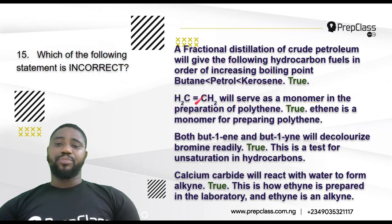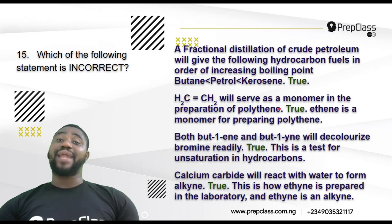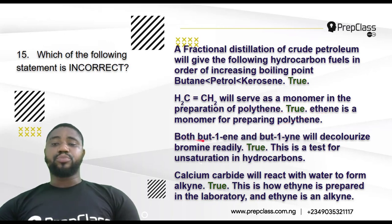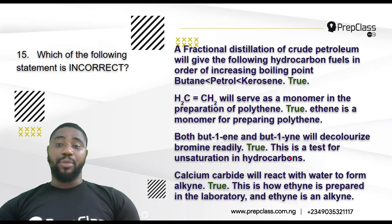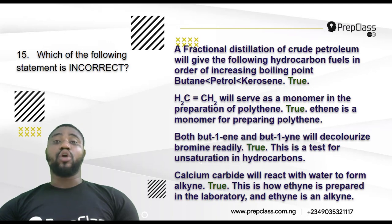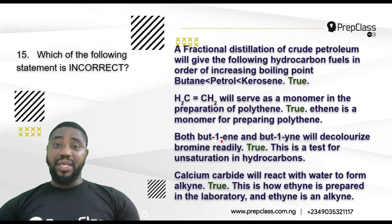Option B — ethene serves as a monomer in the preparation of polyethylene. That is true; ethene is the monomer for preparing polyethylene, which is used in making plastics. Option C — but-1-ene and but-1-yne will decolorize bromine readily. That is true. This is the test for unsaturation in hydrocarbons. Unsaturated hydrocarbons — those with double or triple bonds — decolorize bromine water, turning it from brown to colorless.